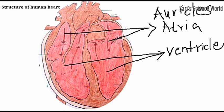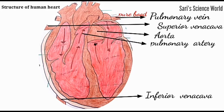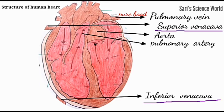The blood vessels are broadly classified into three types: arteries, veins, and capillaries. The blood vessels which carry impure blood from different parts of the body to the right atrium are called the superior vena cava and inferior vena cava.